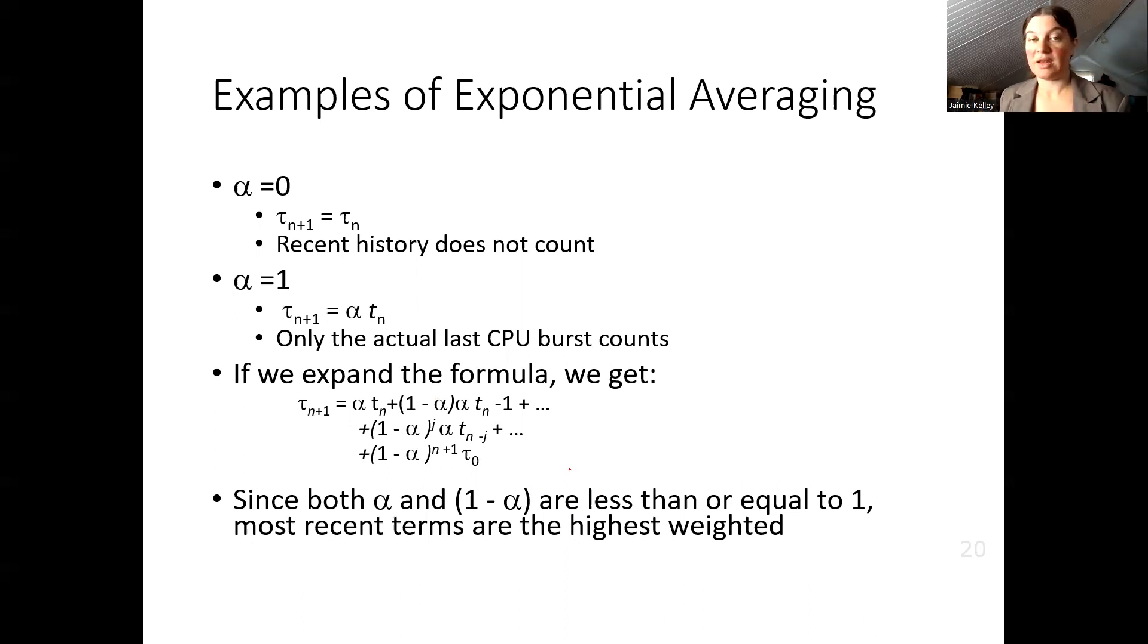However, if we have a value of alpha that is between 0 and 1, not inclusive, we are going to be taking the weight of previous guesses into account and also we will weight the most recent CPU bursts.